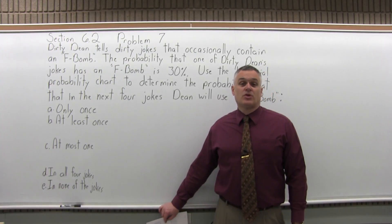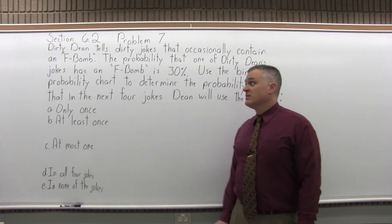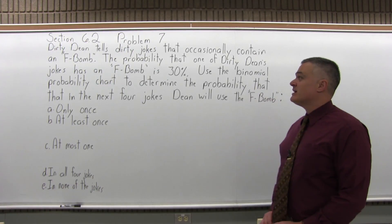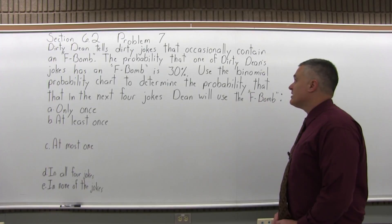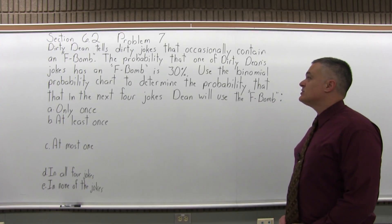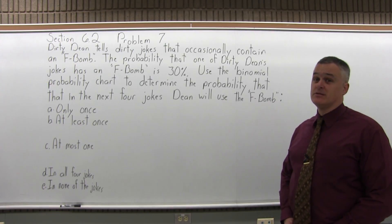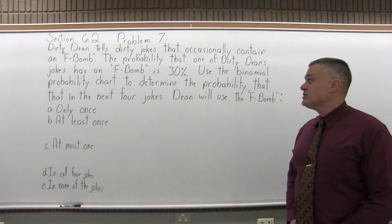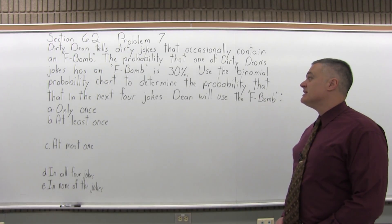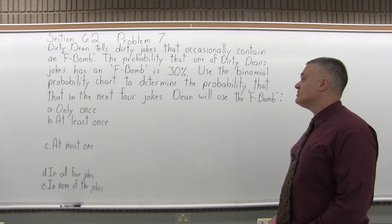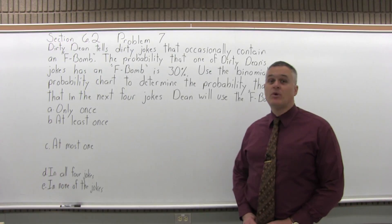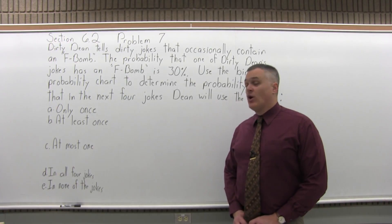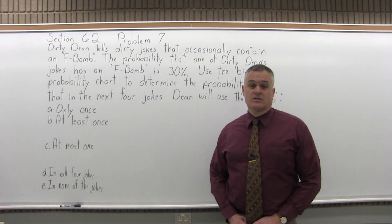This is Section 6.2, Problem 7. It says: Dirty Dean tells dirty jokes that occasionally contain an F-bomb. The probability that one of Dirty Dean's jokes has an F-bomb is 30%. Use the Binomial Probability Chart to determine the probability that in the next four jokes, Dean will use the F-bomb only once, at least once, at most once, in all four jokes, and in none of the jokes.